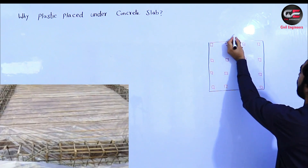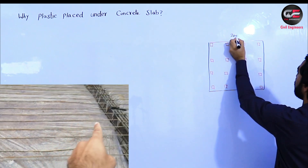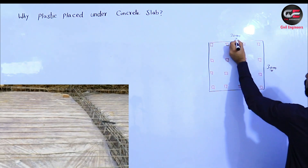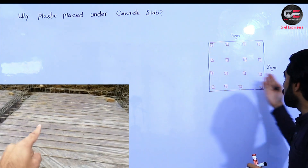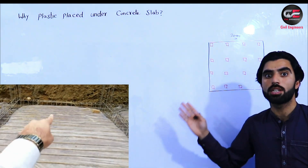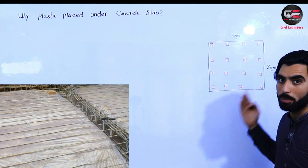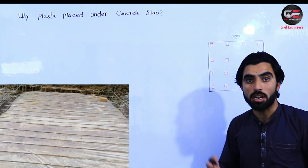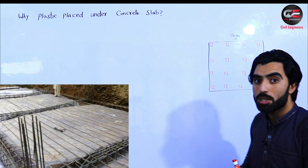In raft foundation, we dig all the area — for example, 20 meters by 30 meters. In raft foundation and slab foundation, we make an overall slab. This is called raft foundation, slab foundation, or mat foundation. Here, we place plastic under the slab.